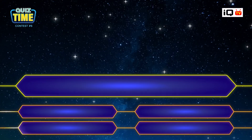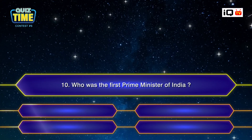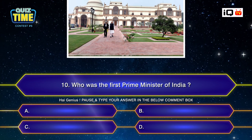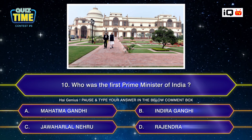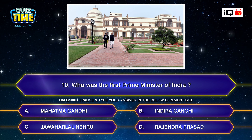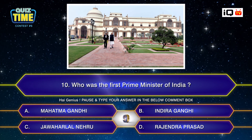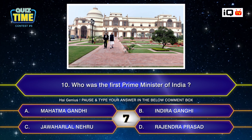Number ten: Who was the first Prime Minister of India? A. Mahatma Gandhi, B. Indira Gandhi, C. Jawaharlal Nehru, D. Rajendra Prasad. Your time starts now. Type your answer down.